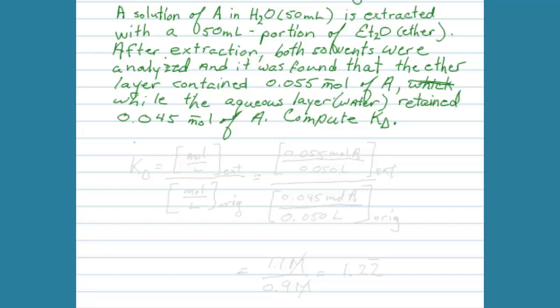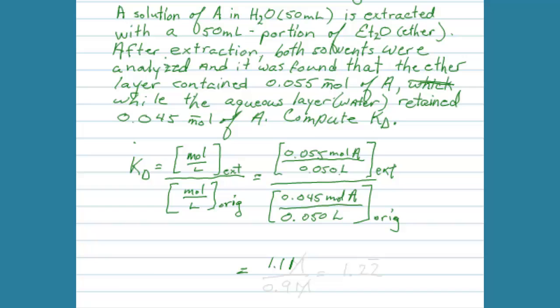And then when we look in the aqueous solution and do an analysis for the analyte, we'll find that approximately 0.045 moles of the analyte was left there. So let's try to compute the KD for this particular process. Remember that KD is equal to the concentration of the analyte in the extracting solvent divided by the concentration of the analyte in the original solvent. And what we can do here is plug in the values. At the end of the extraction there were 0.055 moles of A in the extracting solvent, and there were 50 milliliters which is the same as 0.05 liters in the extracting solvent.